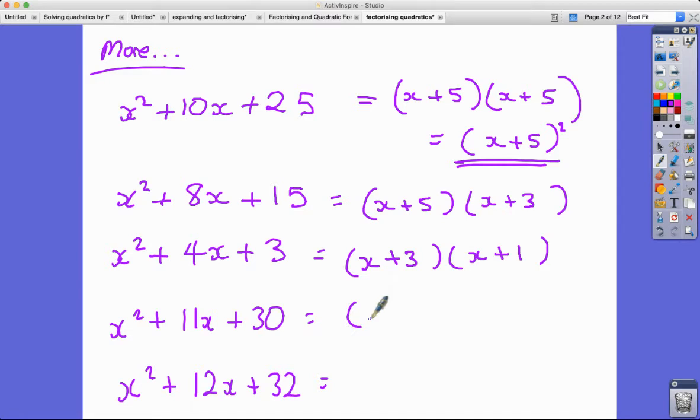Let's look at this next one. So I think 5 and 6 would give us those ones. 5 times 6 is 30, 5 plus 6 is 11. And in here, what would it be? I think it would be 8 and 4. 8 times 4 is 32 and the sum of 8 and 4 is 12.